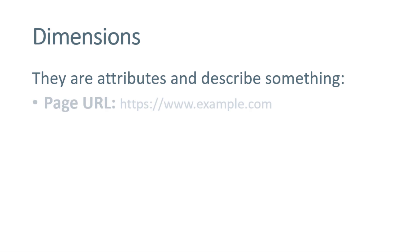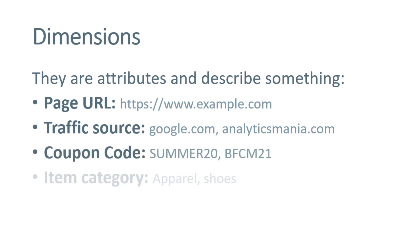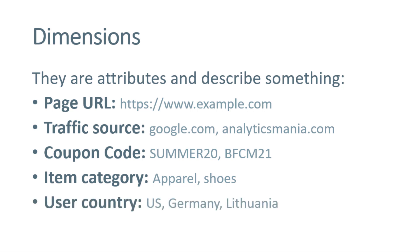Here are several examples. Page URL is a dimension. Then we have traffic source — it can be google.com, analyticsmania.com, something else. Then we have coupon code, item category, user country. As you can see, they describe something and we can use this to create segments and audiences. For example, you can create a report where all the hits are only of those sessions where traffic source is google.com.